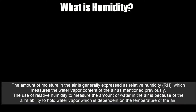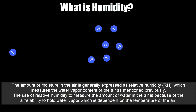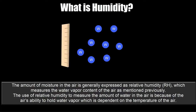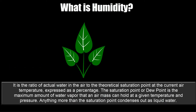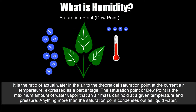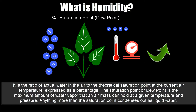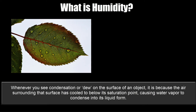What is humidity? The amount of moisture in the air is generally expressed as relative humidity or RH, which measures the water vapor content of the air. The use of relative humidity is because the air's ability to hold water vapor is dependent on the temperature of the air. It is the ratio of actual water in the air to the theoretical saturation point at the current air temperature, expressed as a percentage. The saturation point or dew point is the maximum amount of water vapor that an air mass can hold at a given temperature and pressure. Anything more than the saturation point condenses out as liquid water. Whenever you see condensation or dew on the surface of an object, it's because the air surrounding that surface has cooled to below its saturation point, causing water vapor to condense into its liquid form.